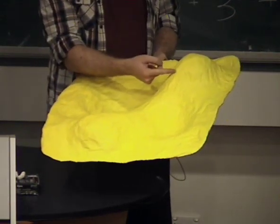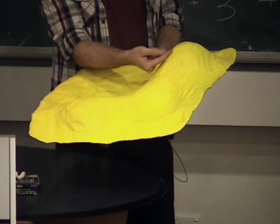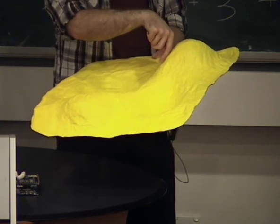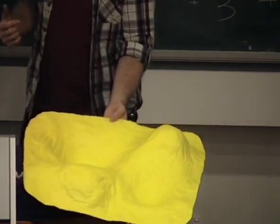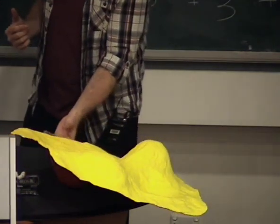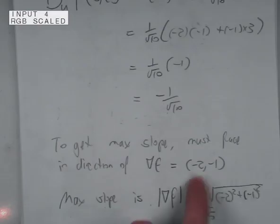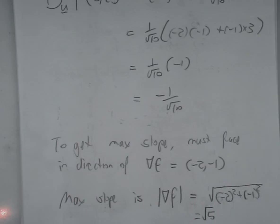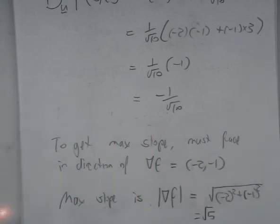So if we're at this point, the direction of steepest ascent is the same direction as the gradient vector. Facing the opposite direction gives steepest descent, and something at right angles to it means you're going around the hill with zero slope. If there were a question asking what direction gives zero slope, the answer is something perpendicular to the gradient vector — like (1, -2) dotted with (-2, -1) gives zero. Any questions about directional derivatives or multivariable calculus? Okay, I'll see you next time.